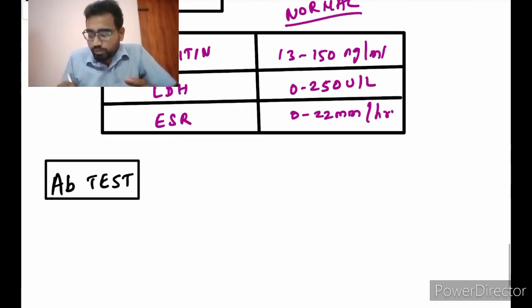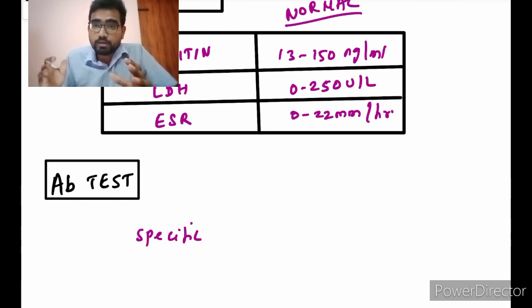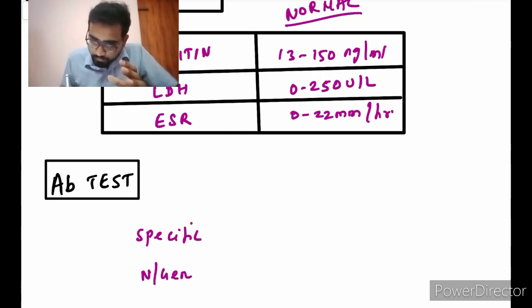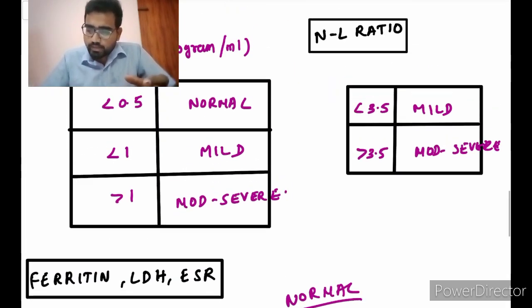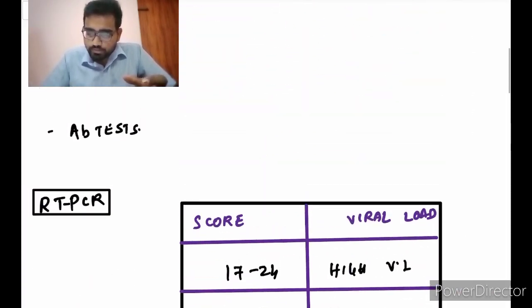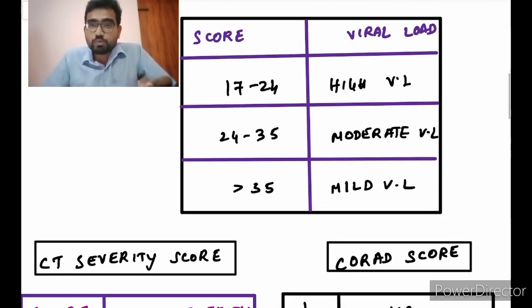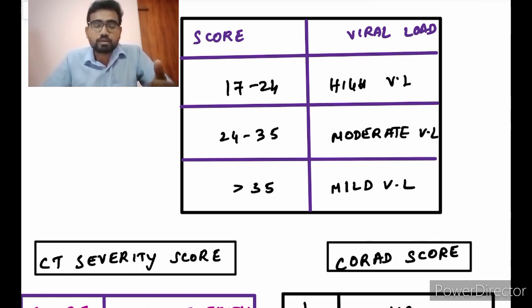The last investigation is the antibody test. There are two types: specific, which detects the anti-spike protein and is helpful for assessing protection, or the general antibody test where SARS-CoV-2 immunoglobulin — specifically IgG — is detected. These are all the basic investigations, their interpretations, and scores. I hope this video was helpful. Please share with your friends, get vaccinated if you get a chance, stay home, stay safe — let's pray this pandemic ends soon. Thank you for watching, see you in the next video, bye bye.